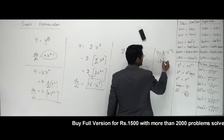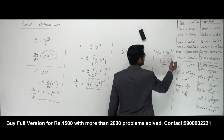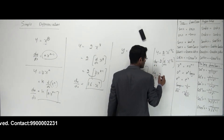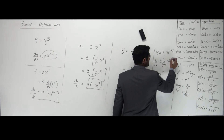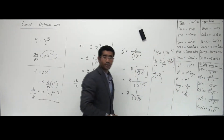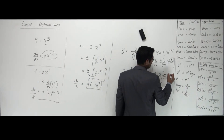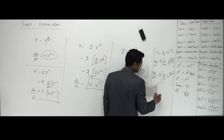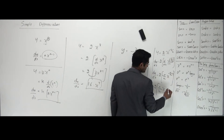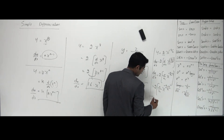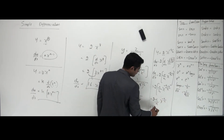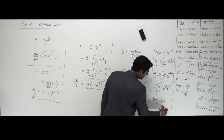Bringing x to the power 5 by 4 up, y equals 2 into x to the power minus 5 by 4. Now the 2 is kept outside, and I differentiate x to the power minus 5 by 4. So dy by dx equals 2 times minus 5 by 4 into x to the power minus 5 by 4 minus 1. Taking LCM of 4, the exponent becomes minus 5 minus 4 over 4, which is minus 9 by 4. Simplifying 2 times minus 5 by 4 gives minus 5 by 2. So the answer is minus 5 by 2 into x to the power minus 9 by 4.